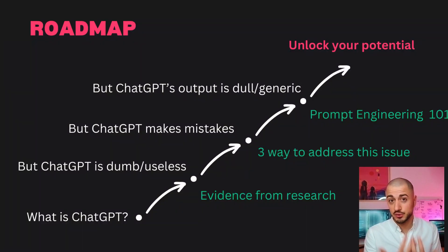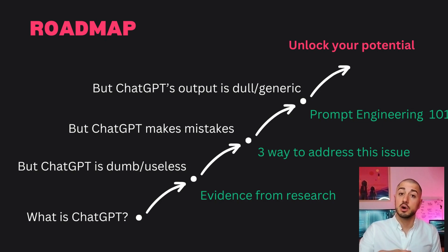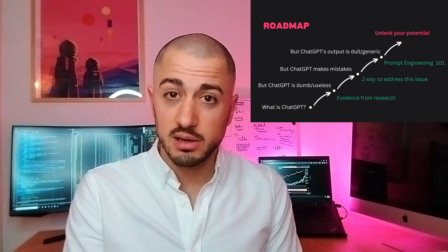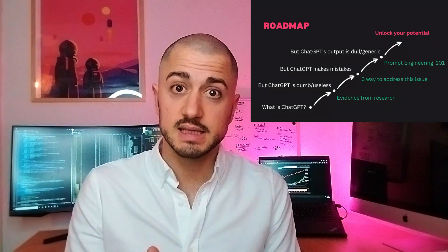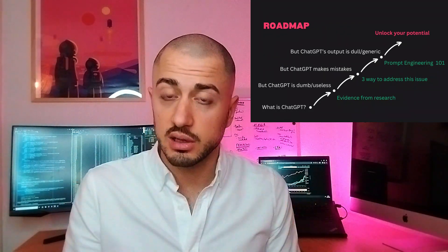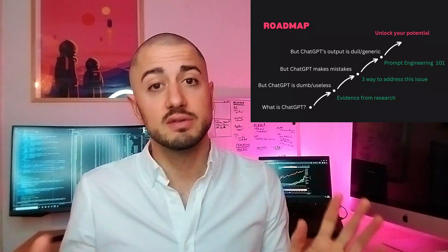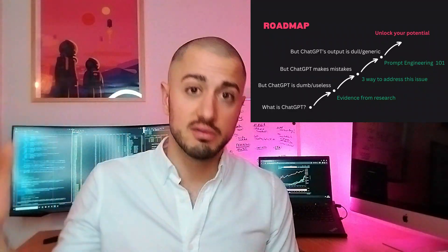Here is the roadmap. First, we'll discuss quickly what ChatGPT is. Then I'm going to address the three myths about ChatGPT and show why they are unjustified or how to overcome the potential issues. Those myths are: ChatGPT is dumb and hence potentially useless; ChatGPT makes mistakes; and the output of ChatGPT is quite generic and dull. We'll see that most of the time these are unjustified accusations and that we can easily overcome those issues.